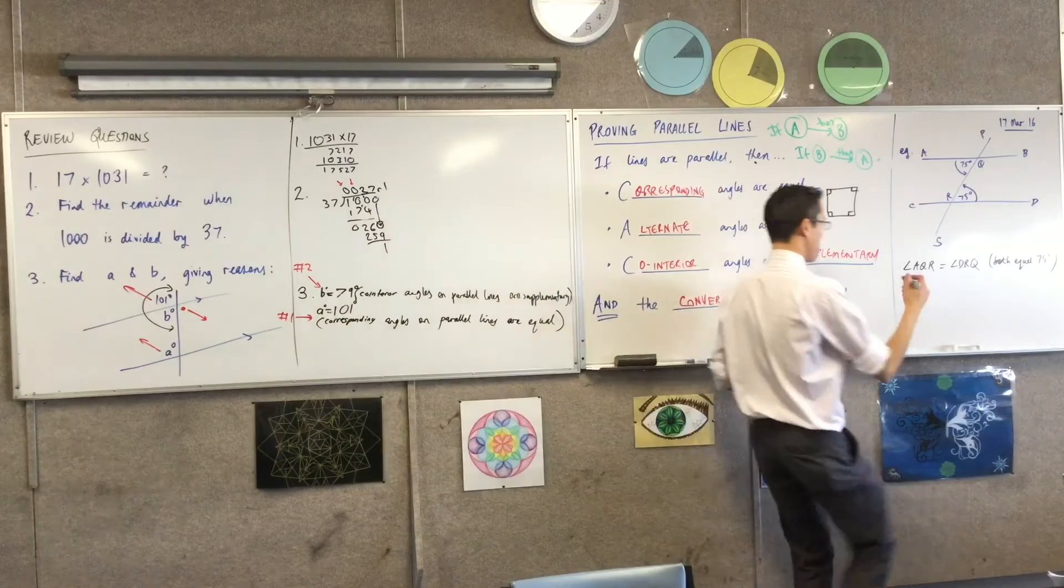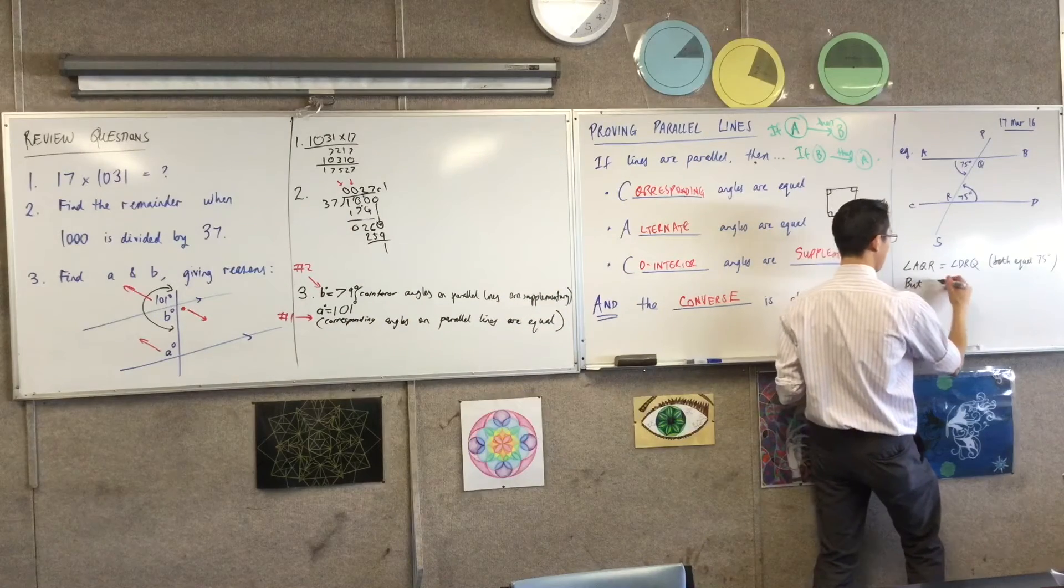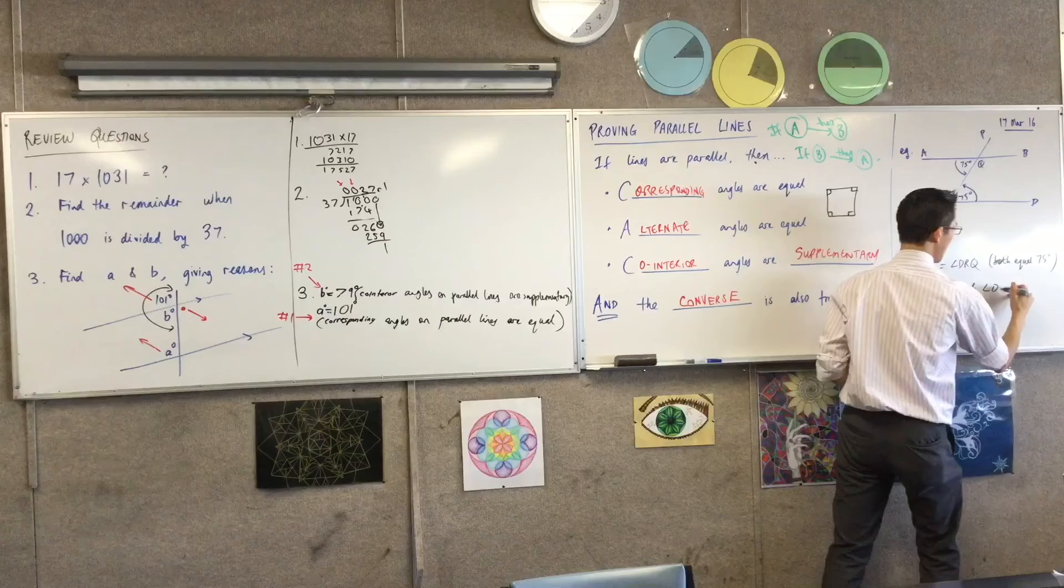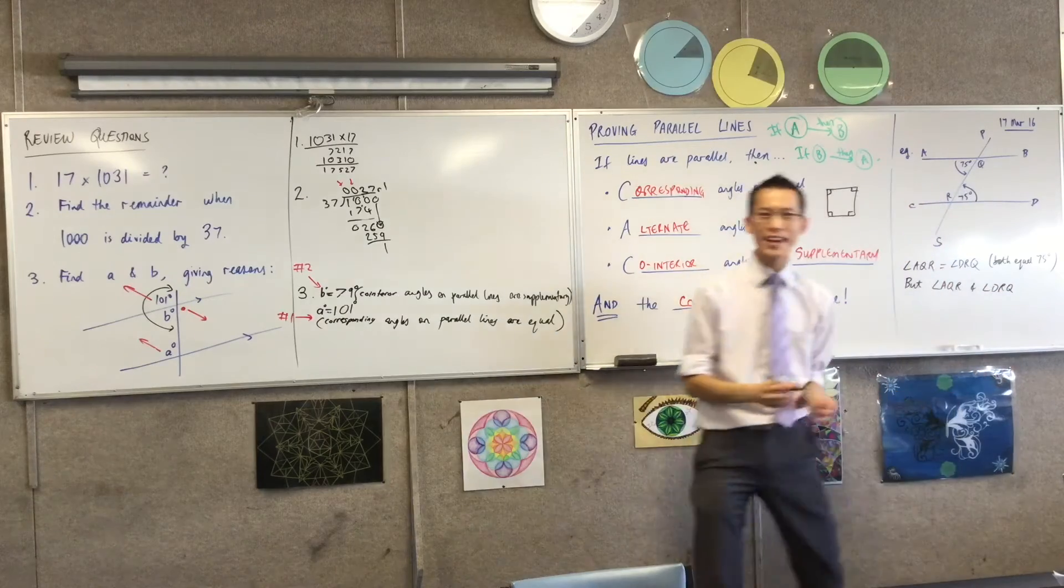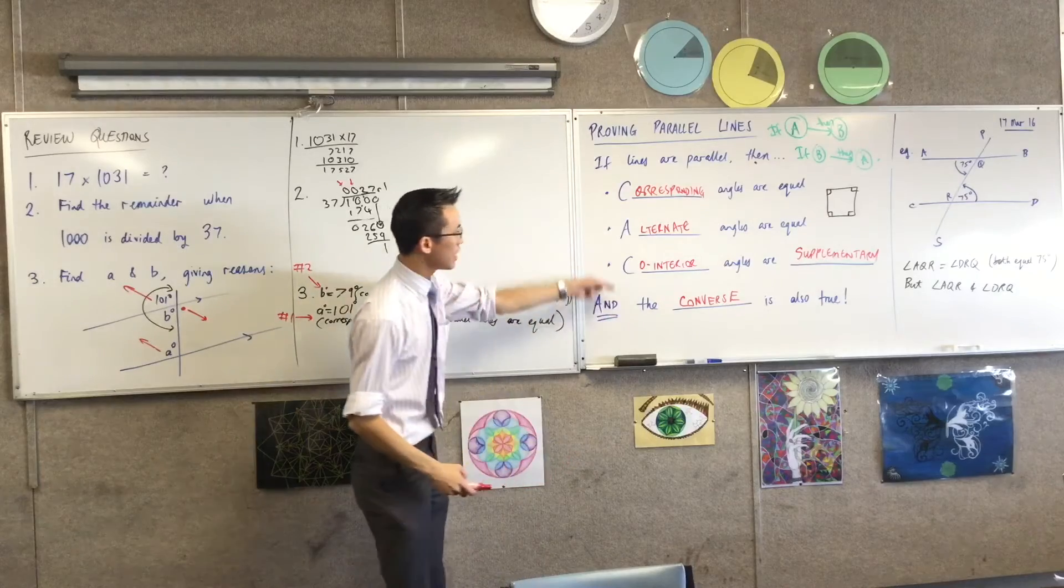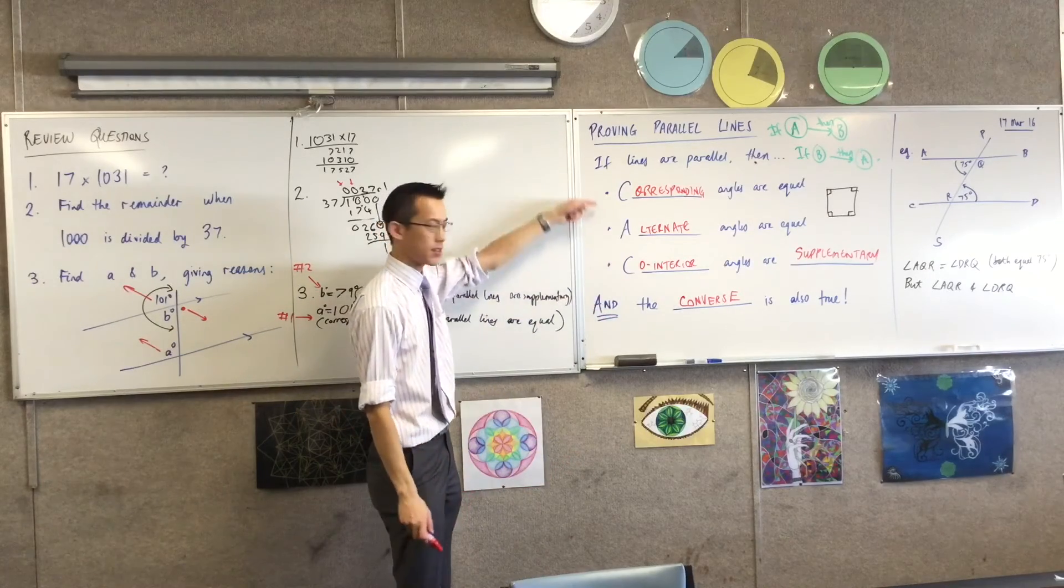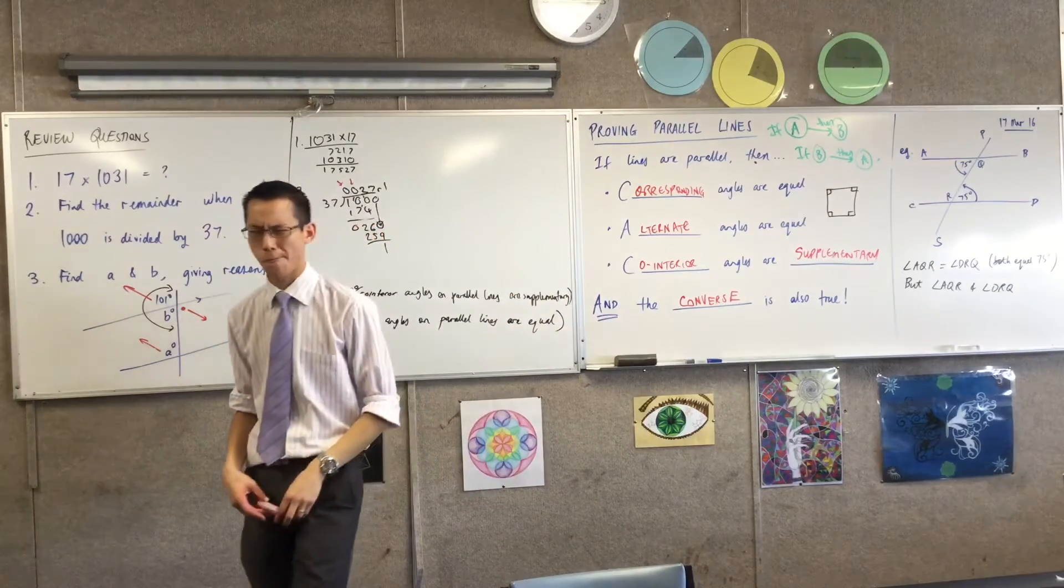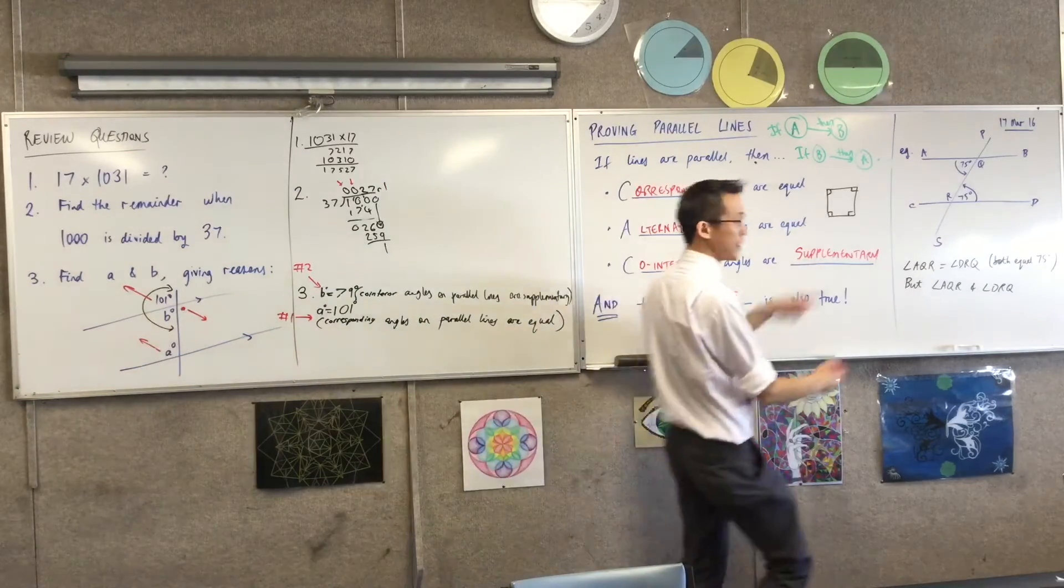Now, I'm going to say, what, angle AQR and angle DRQ are not just random angles here, right? They are related in a particular way. Which relationship do they have out of this set of three? Which one are they? Yeah, they're alternate, fantastic.